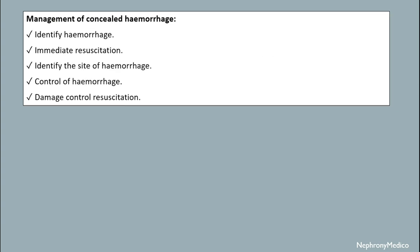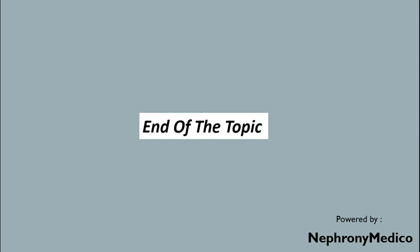The management of concealed hemorrhage involves: identification of the hemorrhage, immediate resuscitation, identification of the site of hemorrhage, control of hemorrhage, and damage control resuscitation may be done. End of topic.